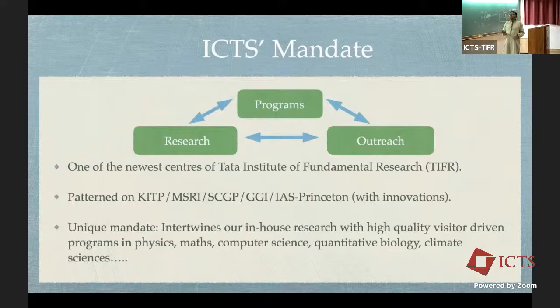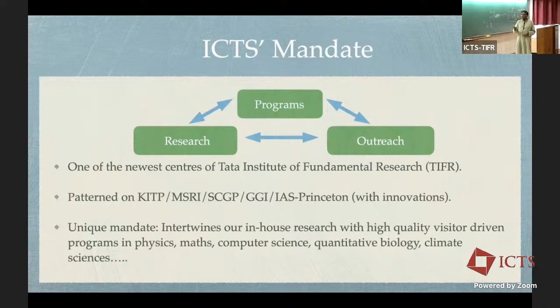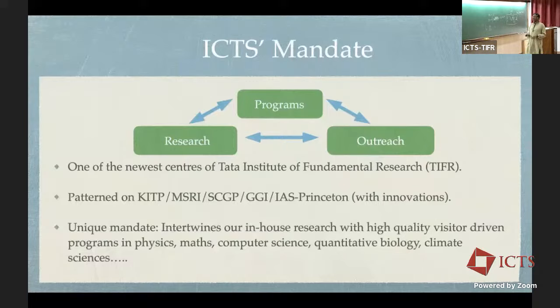We have very active research groups in many areas. The uniqueness of ICTS is to run programs very much along the lines of what other institutions like the KITP in Santa Barbara, the GGI, and IAS Princeton run — just to name a few in the physical sciences. Our in-house research is combined with these visitor-driven programs, and unlike some other institutions, ours spans a broad range in the theoretical sciences: physics, mathematics, computer science, quantitative biology, and climate sciences.